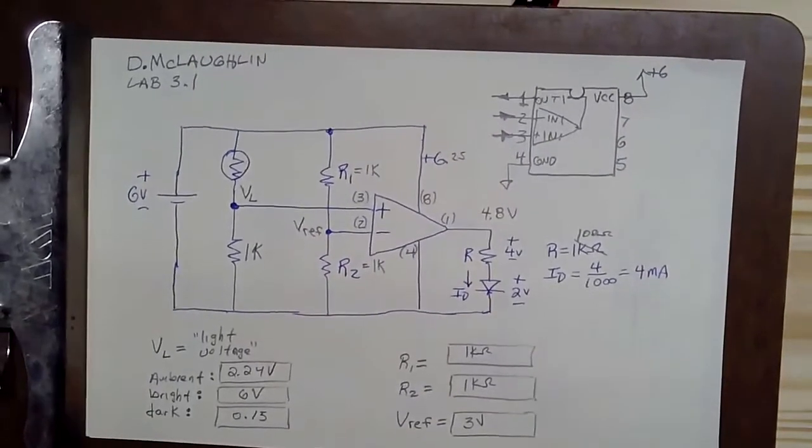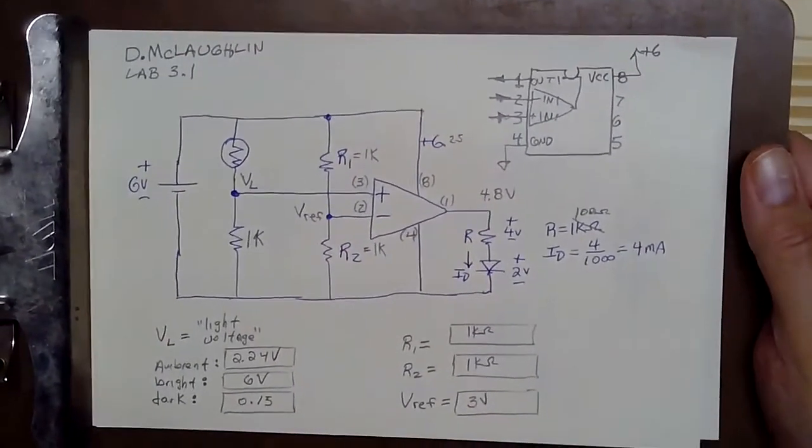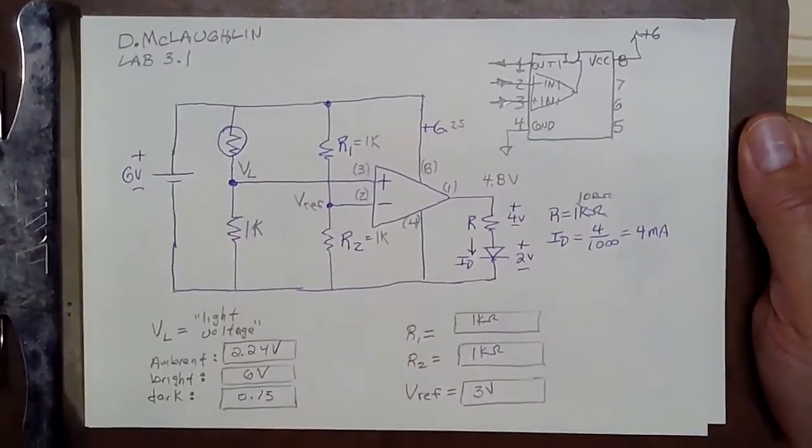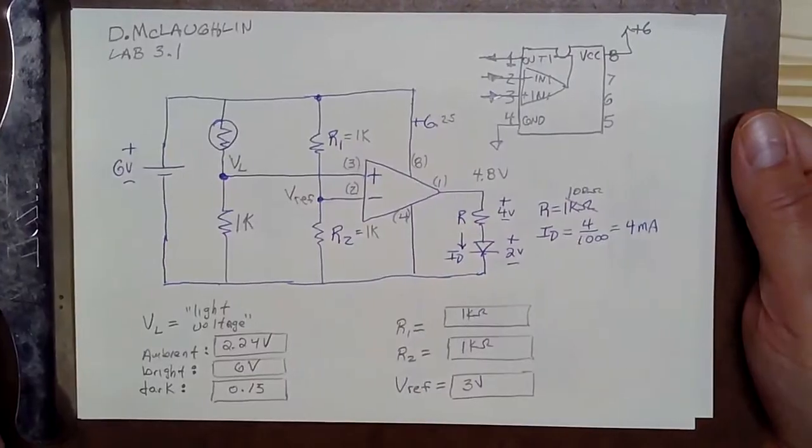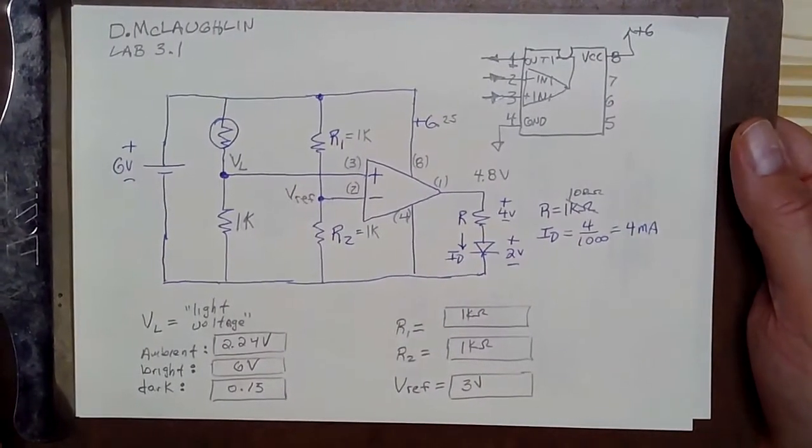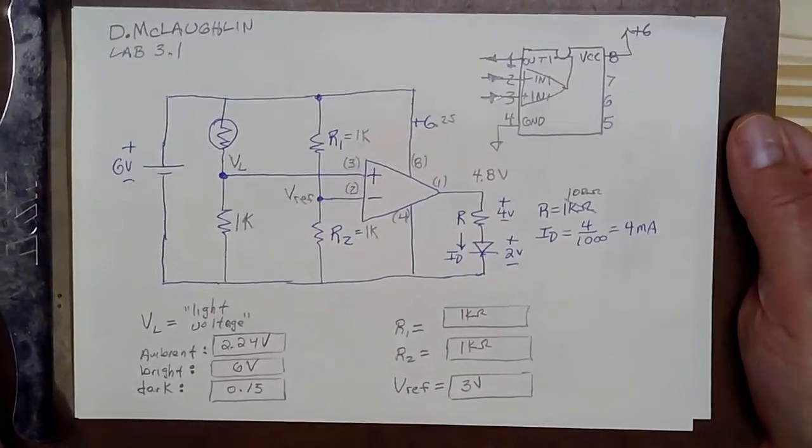Okay, so this is lab exercise 3.2, and I'm starting out with this picture of lab 3.1, and what we're going to be doing is modifying that circuit so that the op amp is able to turn on and off both the motor and an LED instead of just an LED.